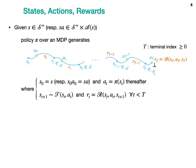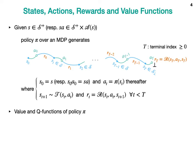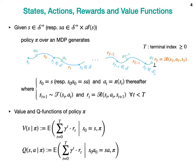T is the terminal index, and the rollout is terminated when a terminal state S_T is reached. We define the value function and the Q function for policy Pi as the expectation of the cumulative discounted reward, given that you start at state S and state-action SA respectively, when following policy Pi.